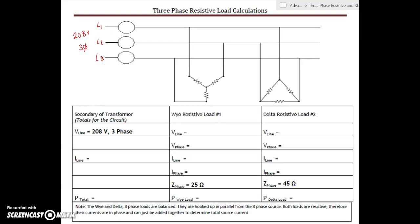No neutral required here because we have balanced loads. Each of these guys is 25 ohms, and each of these loads on the delta are going to be 45 ohms. They're all being fed from 208, so we have 208 volts as the line voltage.